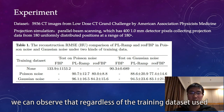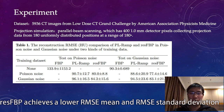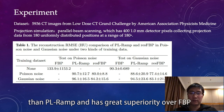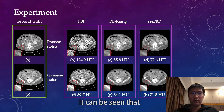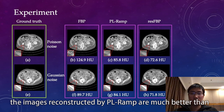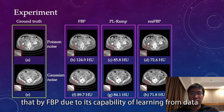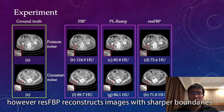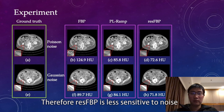From Table 1, we can observe that regardless of the training data size used, ResT FBP achieves a lower RMSE mean and RMSE standard deviation than PL-Ramp, and has greater superiority over FBP under the same condition. It can be seen that images reconstructed by PL-Ramp are much better than those by FBP due to its capability of learning from data. However, ResT FBP reconstructs images with sharper boundaries and lower reconstruction error. Therefore, ResT FBP is less sensitive to noise.